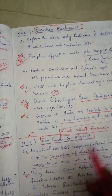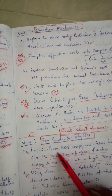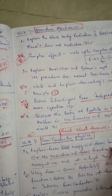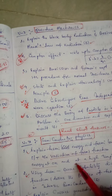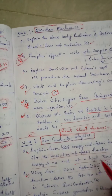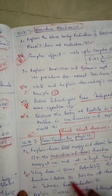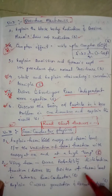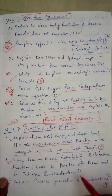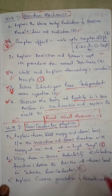Now for Unit 2 - Semiconductor Physics: the first question is 'Explain Fermi energy and Fermi levels, and show the variation of the Fermi function with energy at 0 Kelvin and at high temperature.' The second question is 'Using the Fermi-Dirac probability distribution function, derive the position of the Fermi level in an intrinsic semiconductor.' Both are very important questions carrying six marks.